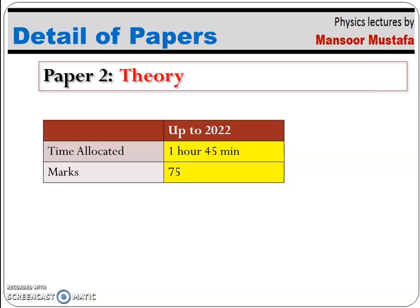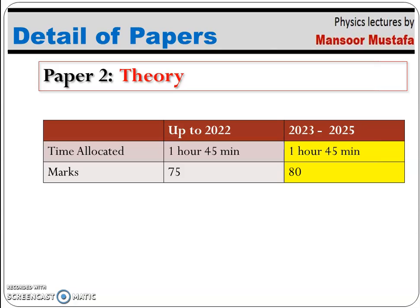For Paper 2, the time allocation remains the same at one hour 45 minutes, but the total marks increase from 75 to 80 — five additional marks are added. This means there will be slightly more content in this paper compared to previous years.